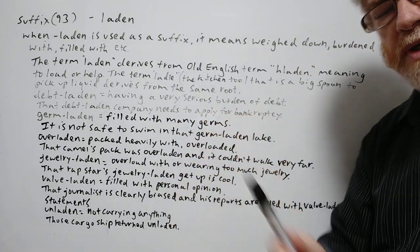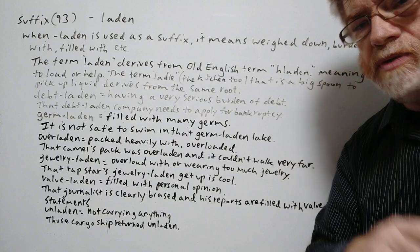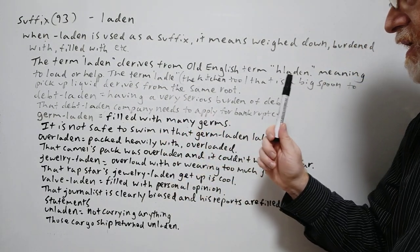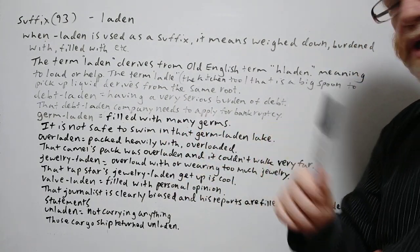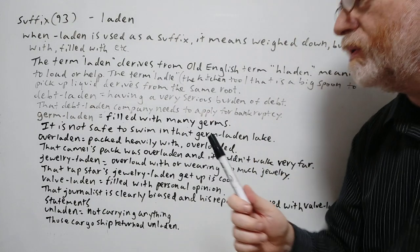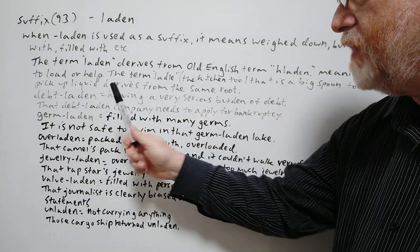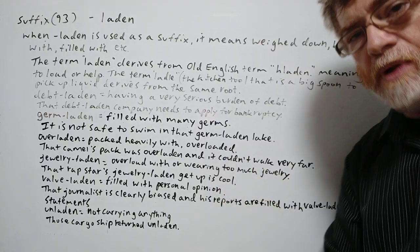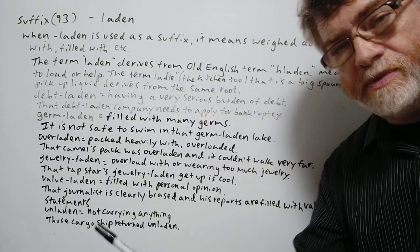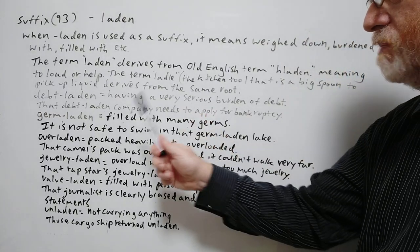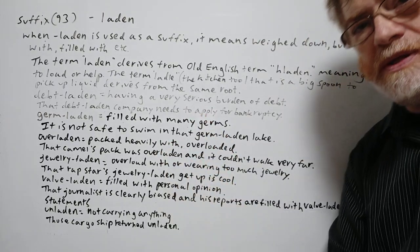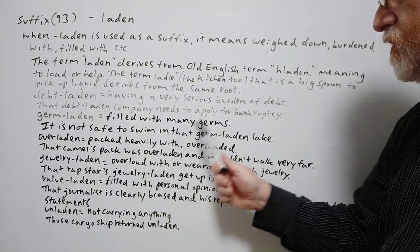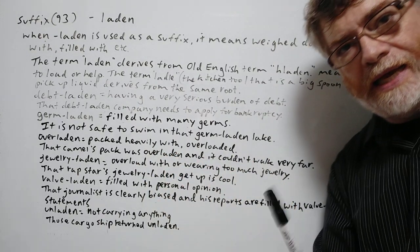We've got several examples here to show just how it's used. First: 'debt-laden' — having a very serious burden of debt. For example: 'That debt-laden company needs to apply for bankruptcy.' Next: 'germ-laden' — filled with many germs. For example: 'It is not safe to swim in that germ-laden lake.'